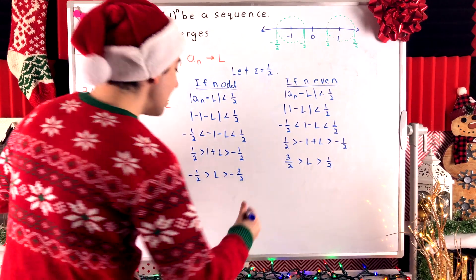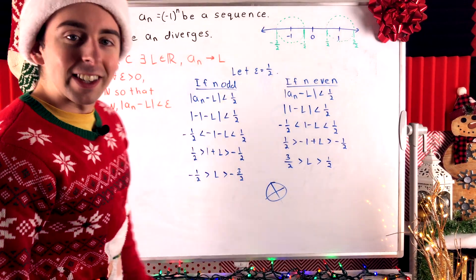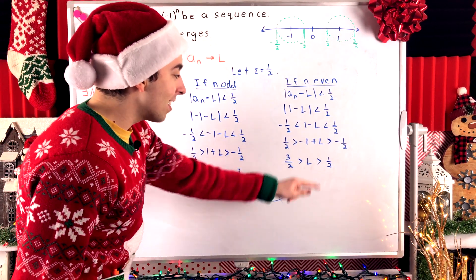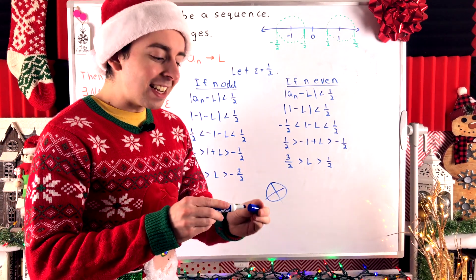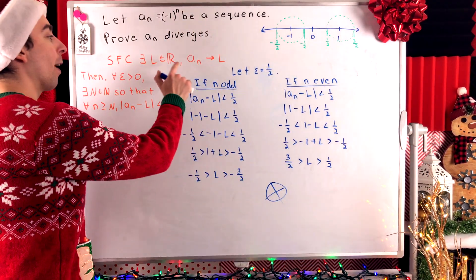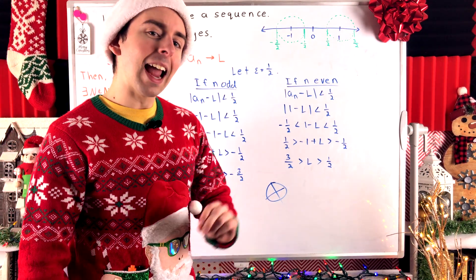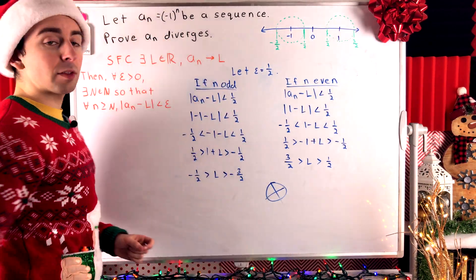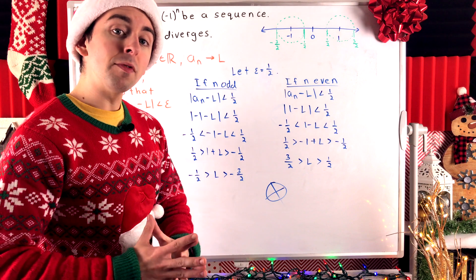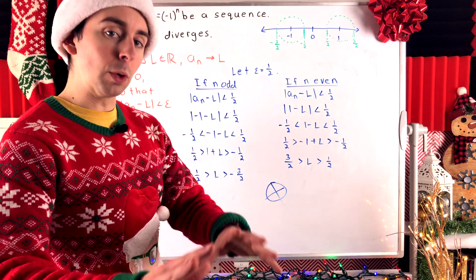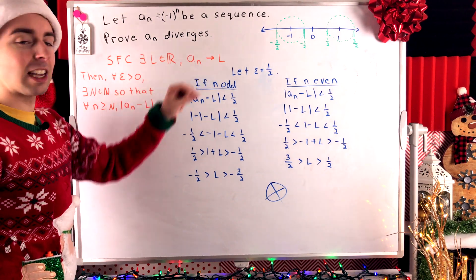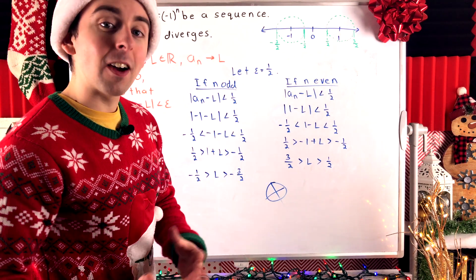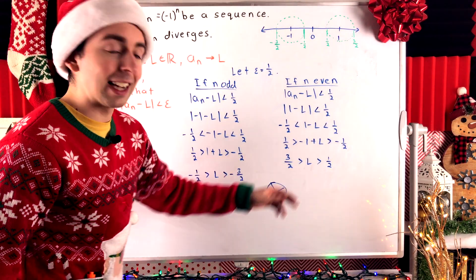And here we see the contradiction. The odd-n restriction implies L is negative (between -3/2 and -1/2), while the even-n restriction implies L is positive (between 1/2 and 3/2). That is impossible. So the sequence a_n cannot converge to any real number L, and by definition it diverges.